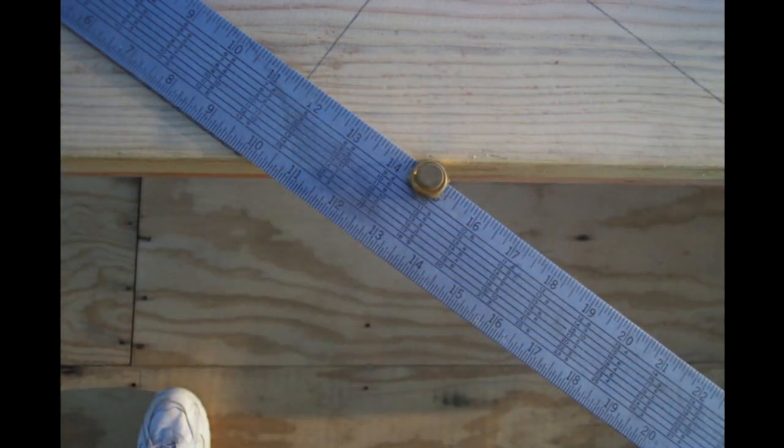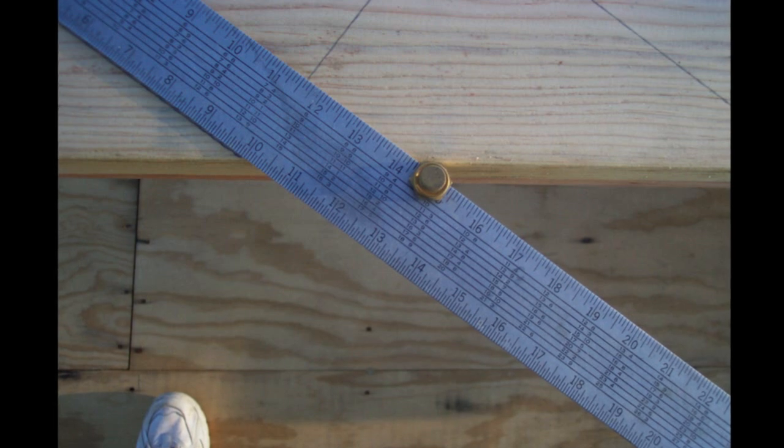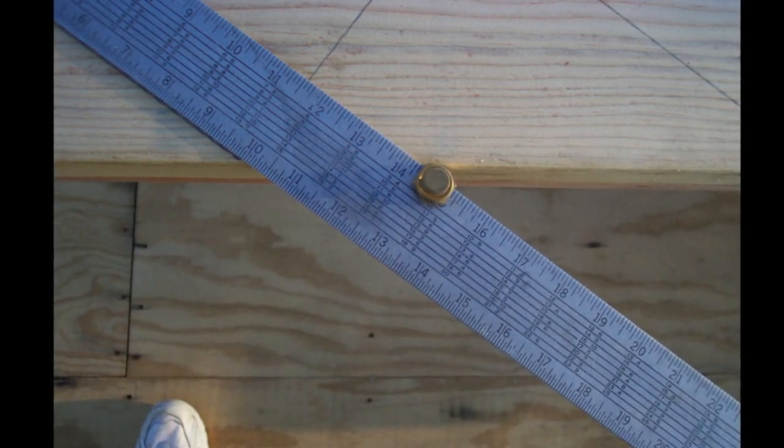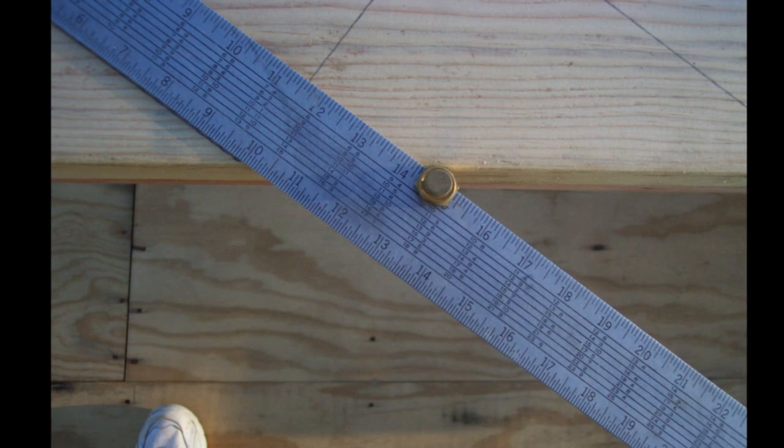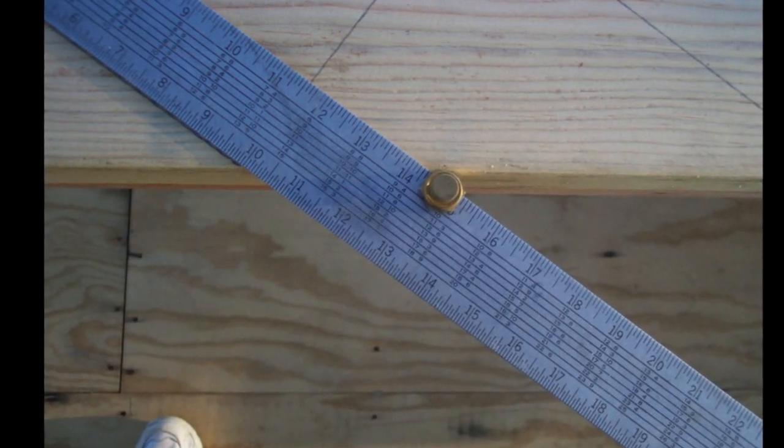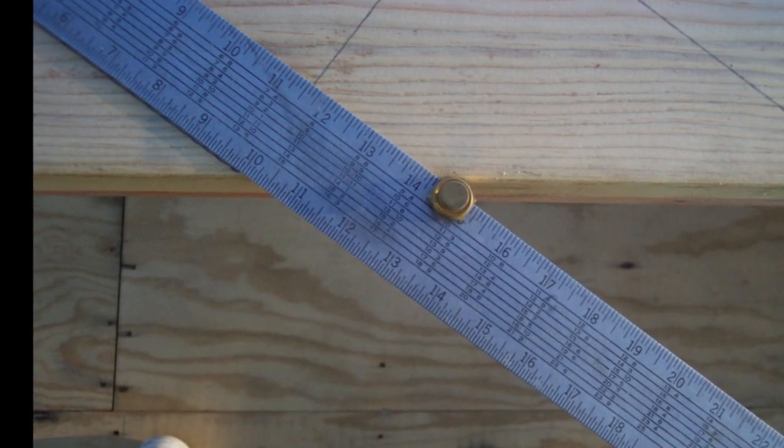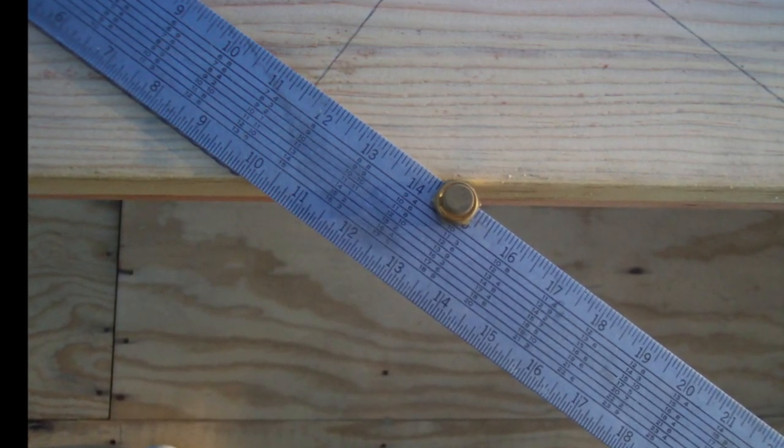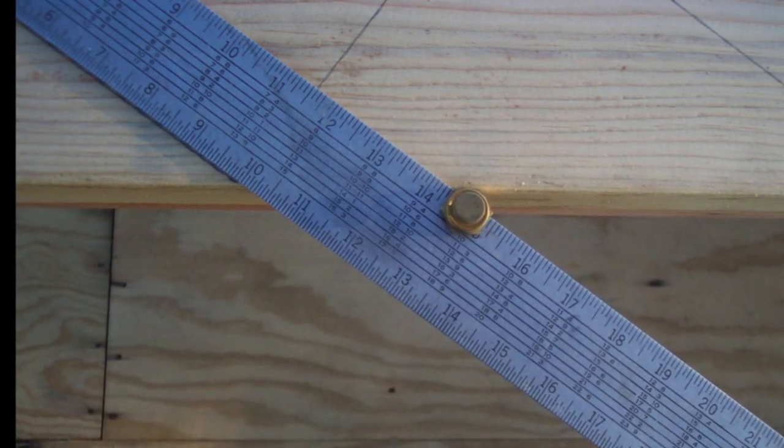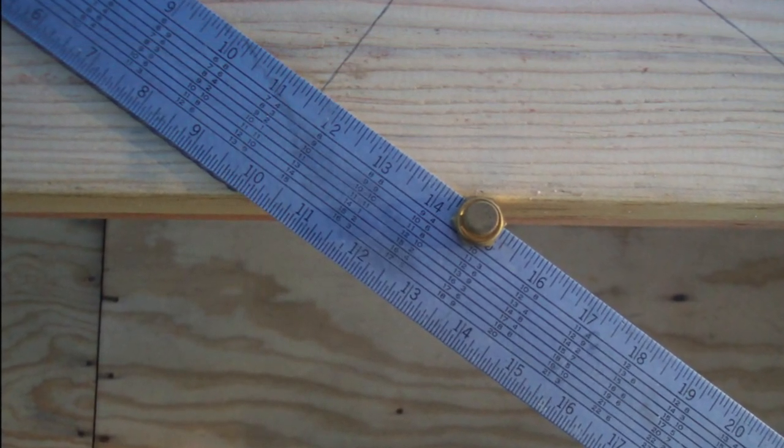Here's a good shot of the stair stringer and the framing square positioned for the next stair step or stair tread marks. We're using the riser mark from the previous stair layout or framing square position to make our next marks and line the framing square up correctly.